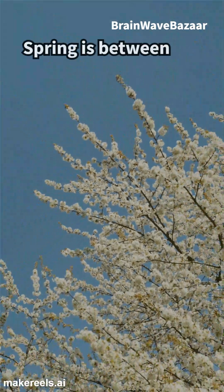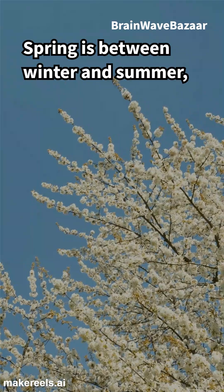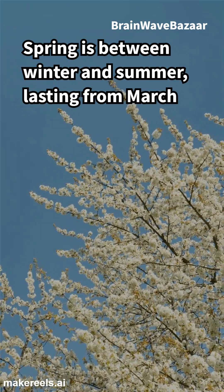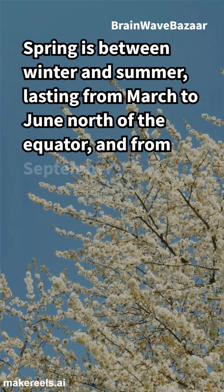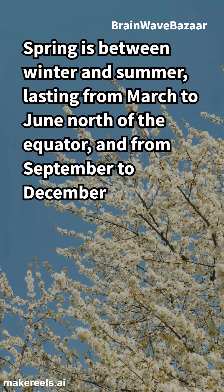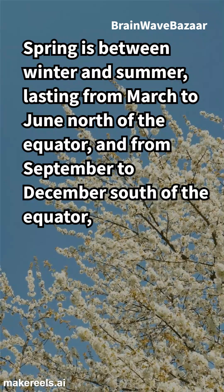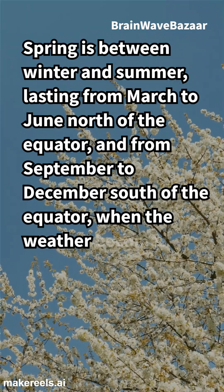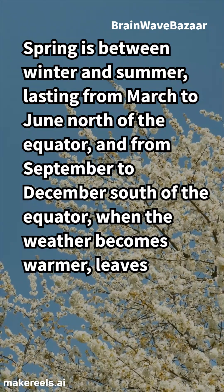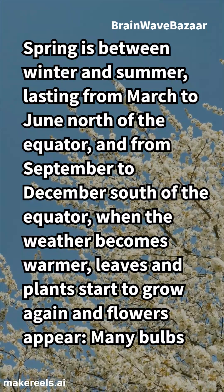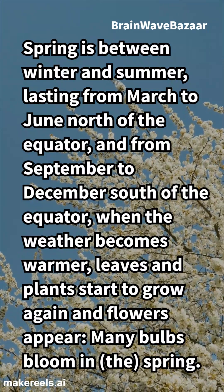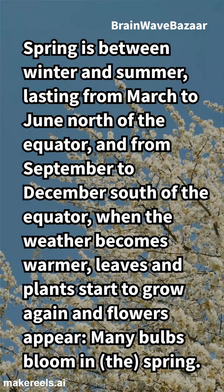Spring is between winter and summer, lasting from March to June north of the equator, and from September to December south of the equator. When the weather becomes warmer, leaves and plants start to grow again and flowers appear. Many bulbs bloom in the spring.